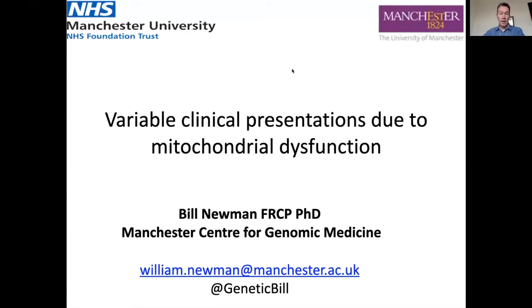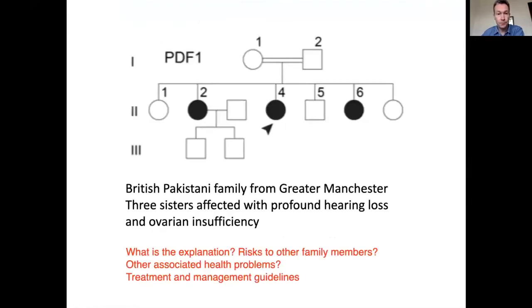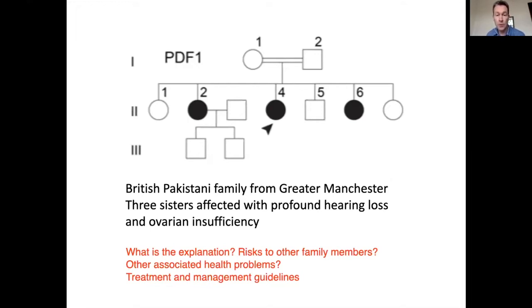Thank you for inviting me to share some of our work around mitochondrial disorder that we started to get interested in a number of years ago. This was a family seen in Manchester about 10 years ago. From the pedigree there are three young women from a British Pakistani family from Manchester, and they were all affected with profound hearing loss and variable degrees of ovarian insufficiency. Individual number two had two children but experienced menopause at the age of 23.